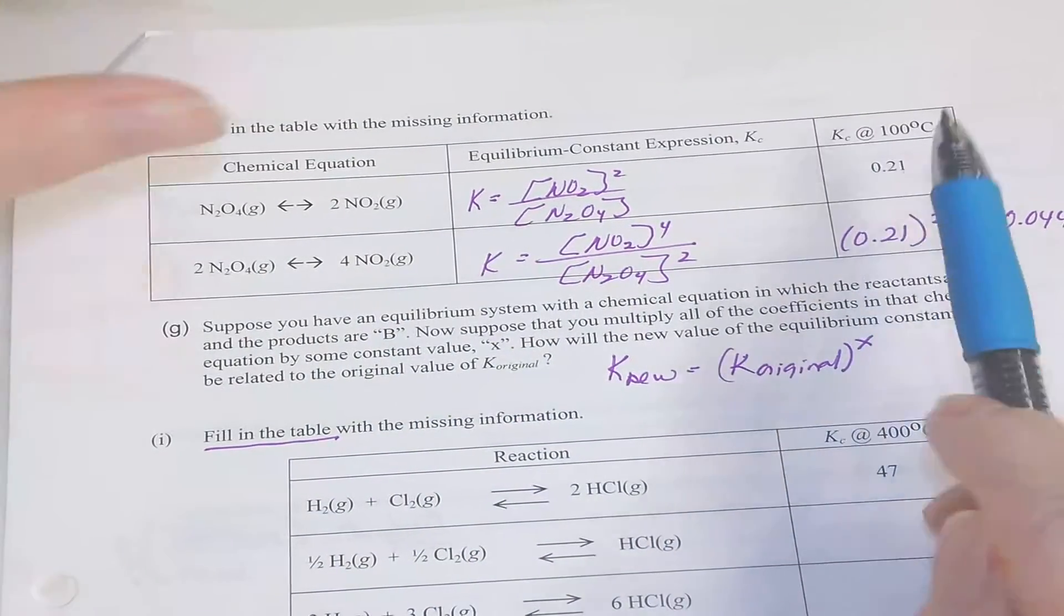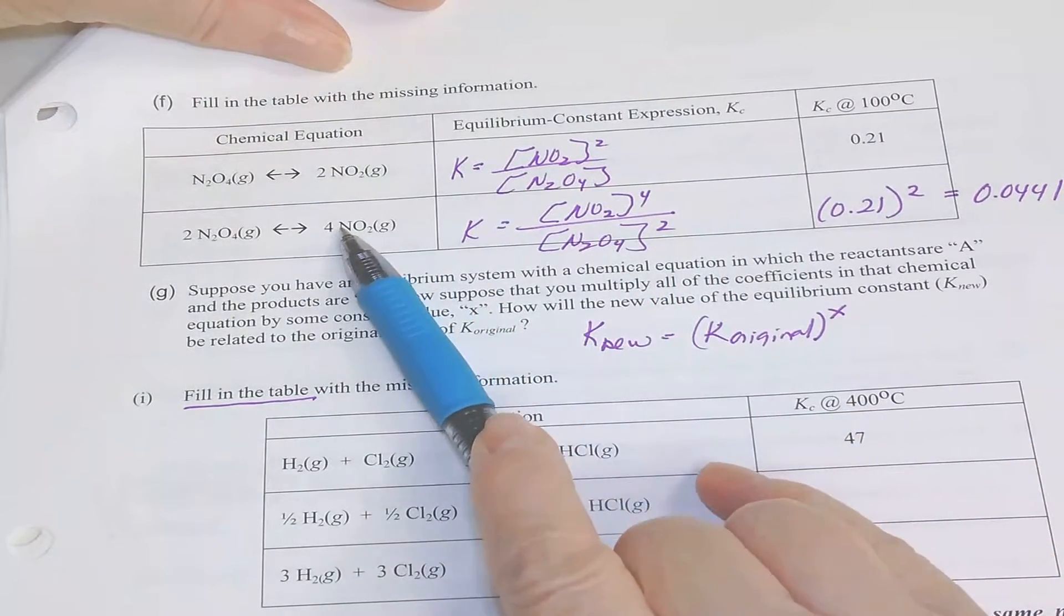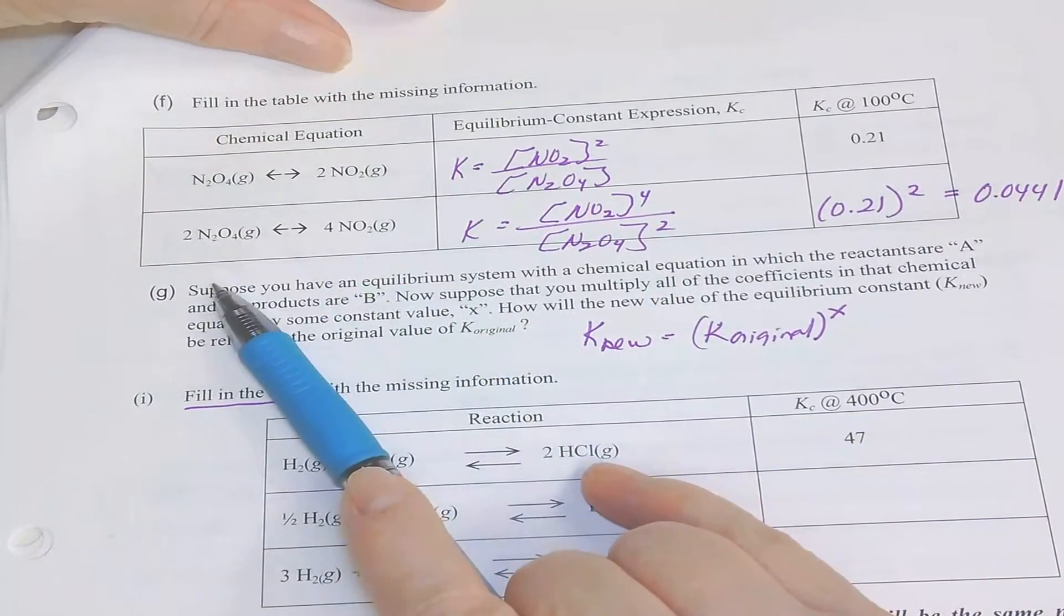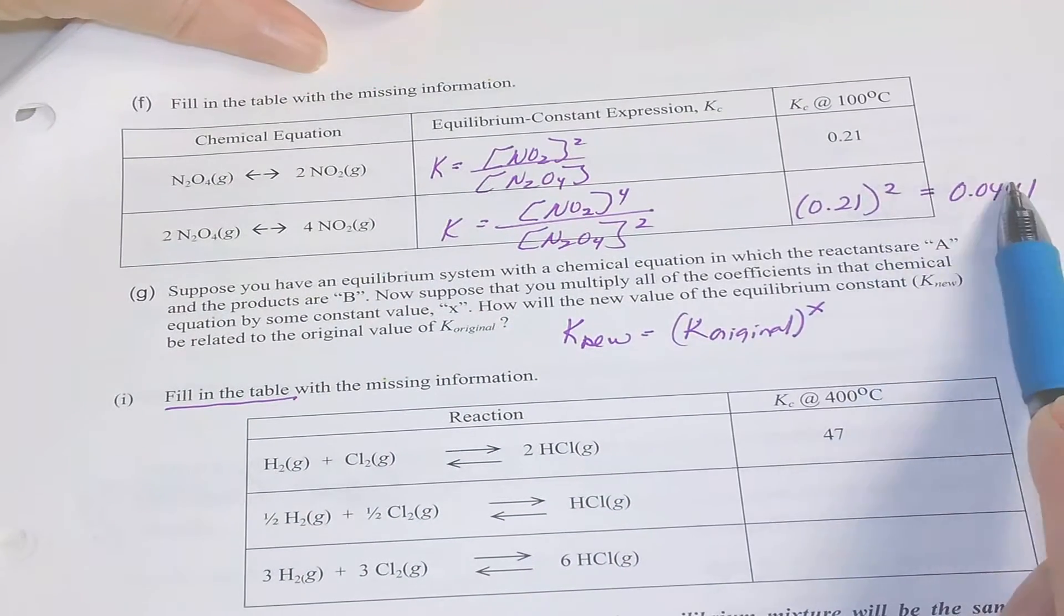Instead of doubling that, we are squaring that K value. So if you double, or whatever power you change your equation by, you will raise that K value to that.